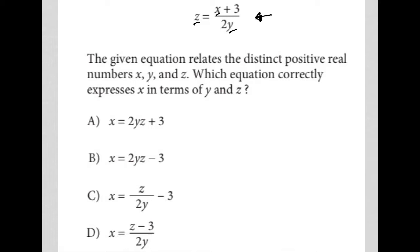So the question says the given equation relates the distinct positive real numbers x, y, and z. So we know that they're distinct, so they're all different, and we know that they're all positive, and they're real numbers, obviously. They're not imaginary numbers.